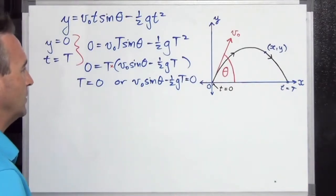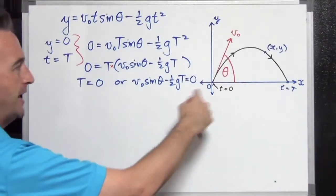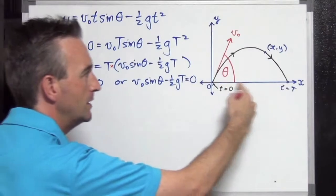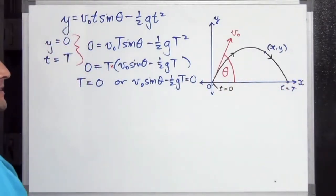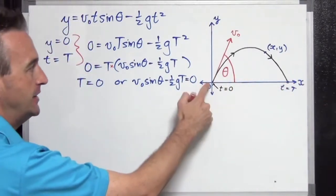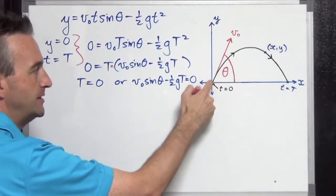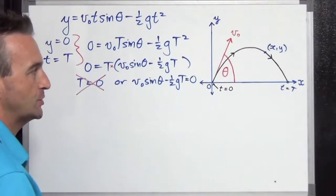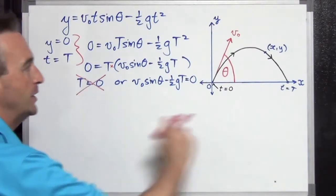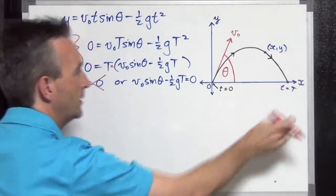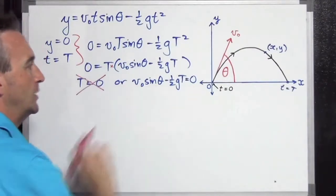So why do we get two values? Well, we're getting two separate values. How many times is the particle at ground level? Well, it's actually at ground level twice: when it's initially fired, which is this one. So this T equals zero represents when it's here. That's actually not what we're interested in. It's true, but it's not what we're interested in. You're interested in the other one. So this time over here must be given by this equation.